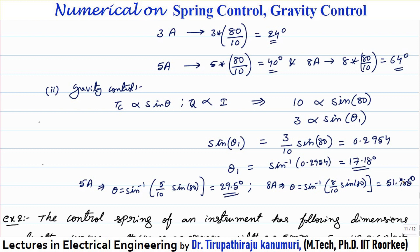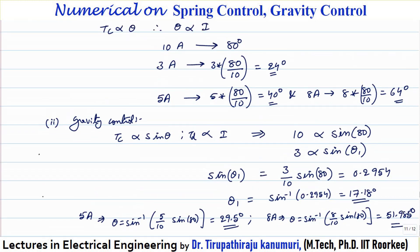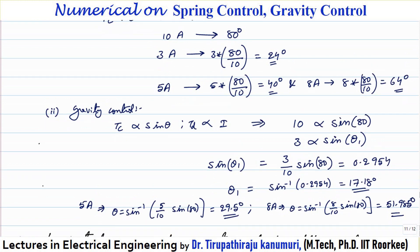Comparing the results: for spring control versus gravity control — for 3 amperes, spring gives 24 degrees while gravity gives only 17.18 degrees. For 5 amperes, spring gives 40 degrees while gravity gives 29.5 degrees. For 8 amperes, spring gives 64 degrees while gravity gives only 51.985 degrees.